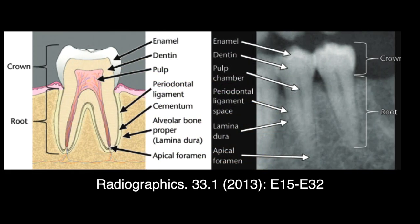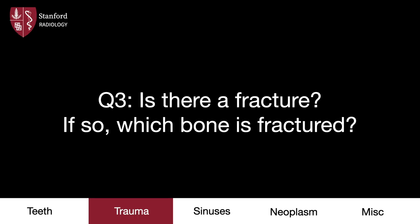Here's a diagram of what a normal periapical region should look like. Let's move on to trauma, our next category.